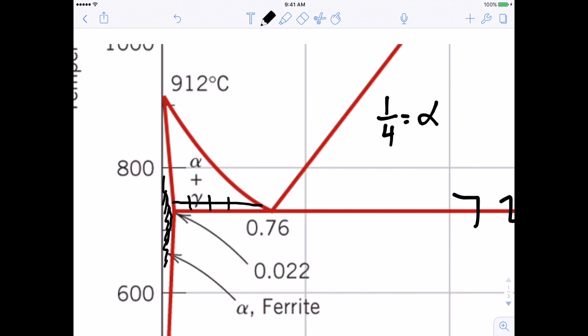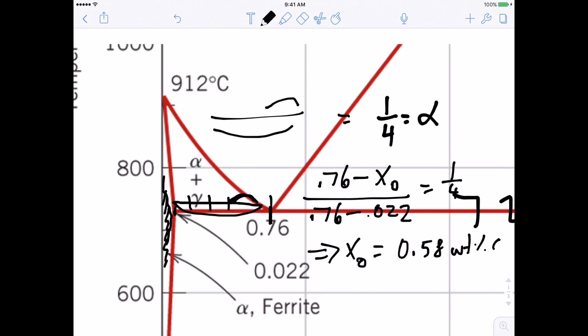So a quarter is equal to the small line segment length that I drew divided by the total. That's what the lever rule tells us. We can solve this exactly by writing the following equation. We know this composition is 0.76. So 0.76 minus this composition we're trying to figure out divided by the total line segment length, which is going to be 0.76 minus 0.022 is going to equal a quarter. And then when we solve for x0 from that equation, we get a composition of 0.58 weight percent carbon. And that's our answer.